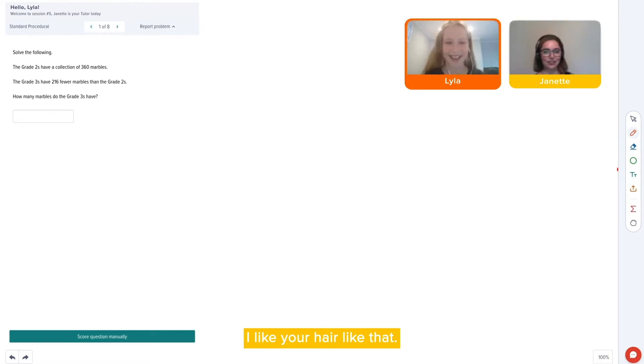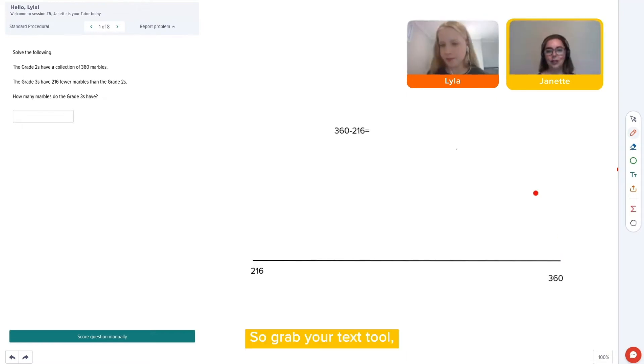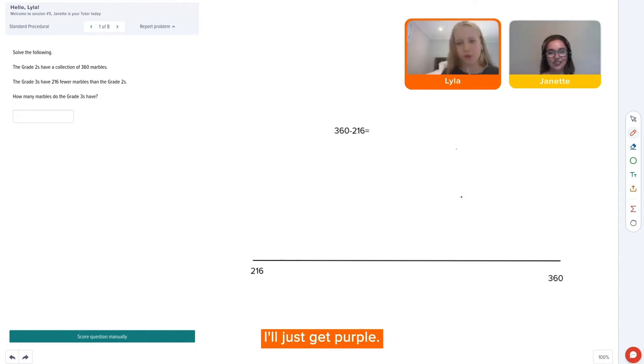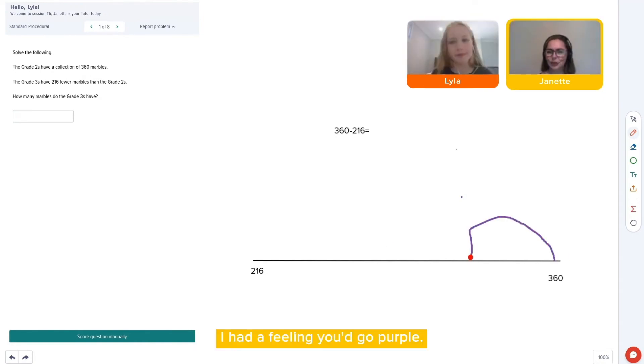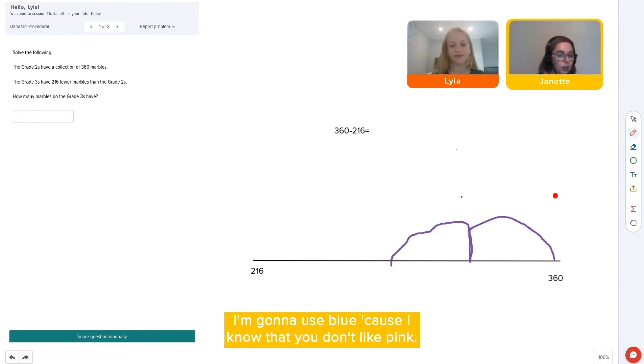I like your hair like that. Thank you. So grab your textile and you'll see you'll be able to change to your favourite colour. I should go purple. I have a feeling you'd go purple. I'm going to use blue because I know that you don't like pink.